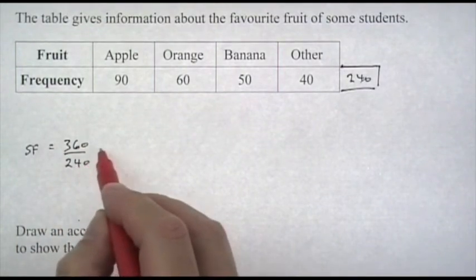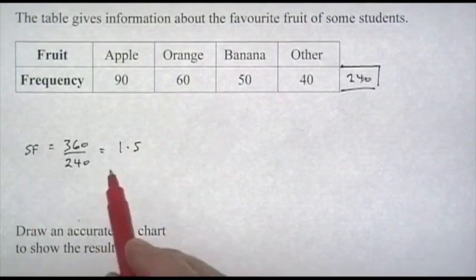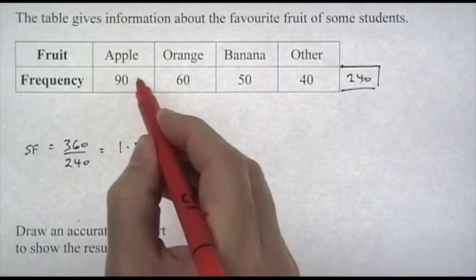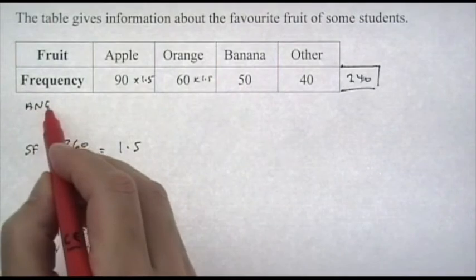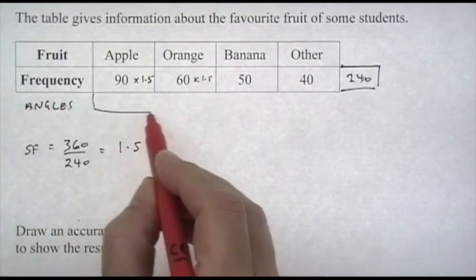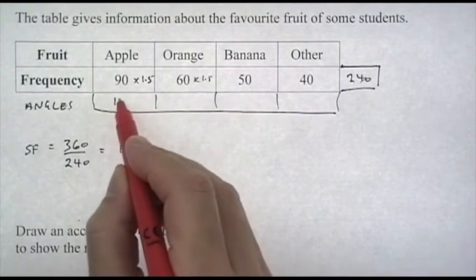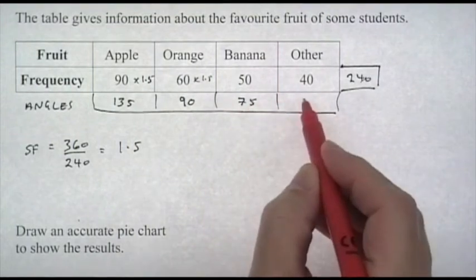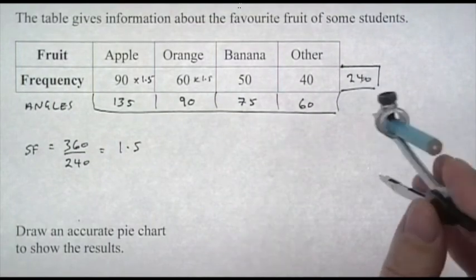Then work out the scale factor: biggest over smallest, 360 over 240, comes to 1.5. So we've got to scale all the values in the table up to get 360, so multiply them all by 1.5. We change the 240 total to 360, which is perfect for a circle. 90 times 1.5 is 135, 60 goes to 90, 50 goes to 75, and 40 goes to 60.